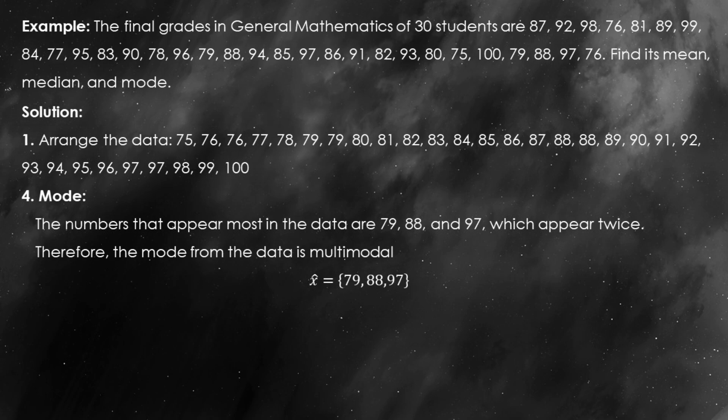Let's find the mode, which is the grade that appears most frequently. Looking at our sorted list, we see that the grades 79, 88, and 97 each appear twice, while all the other grades appear only once. So this data set has three modes — 79, 88, and 97 — making it a multimodal data set.